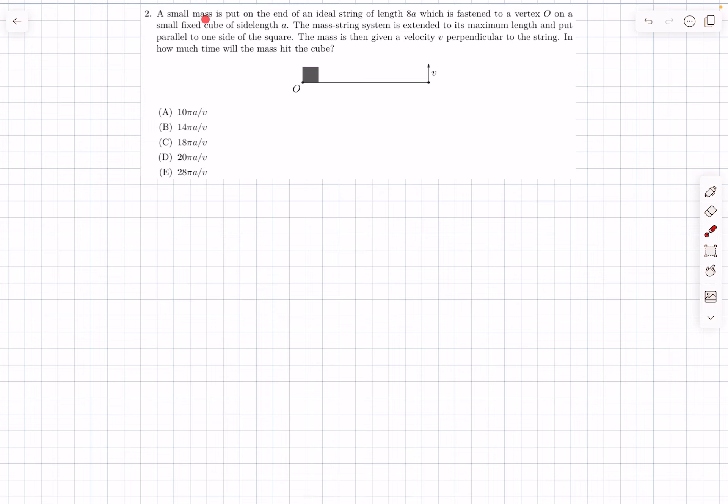Welcome back everyone. Today's problem is based on mechanics. We have a small mass at the end of an ideal string whose length is 8a, with one end at point O completely stretched out. The side length of the cube is a. The mass m is given a velocity v perpendicular to the string. We have to find the time after which the mass will strike the cube.